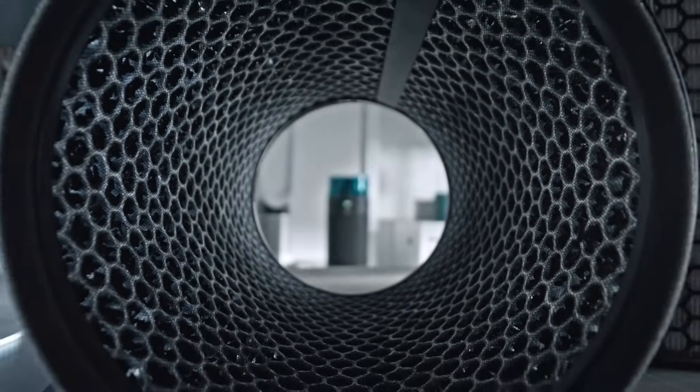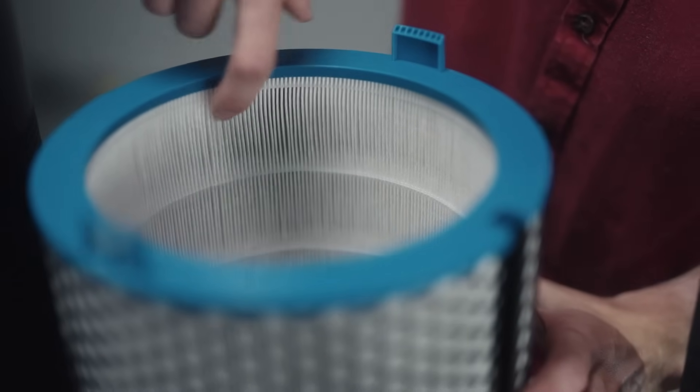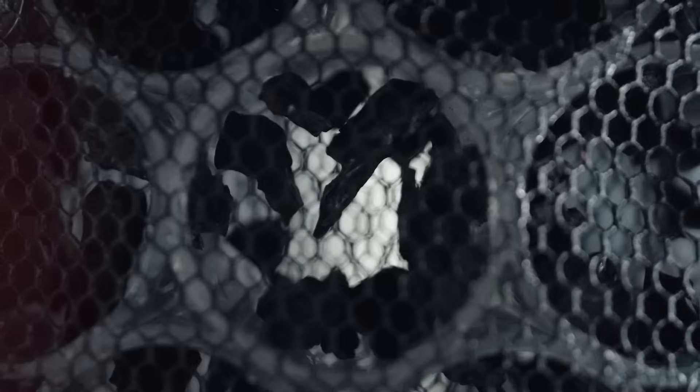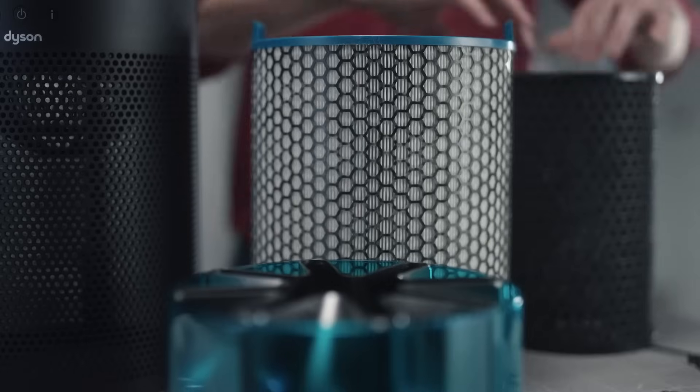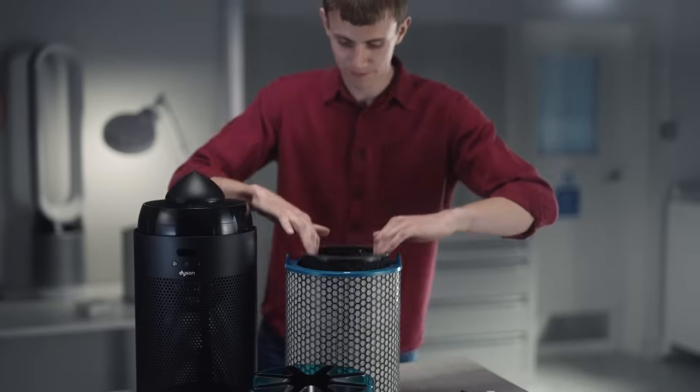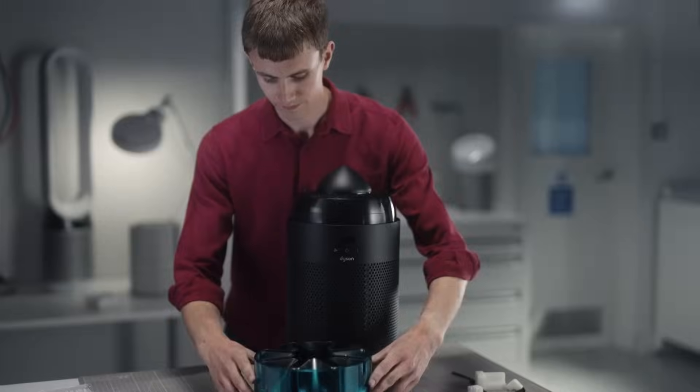Hushjet has 360 degree filtration, a five-year electrostatic HEPA filter which captures particles down to 0.3 microns. Our activated carbon filter removes odours from pets and cooking, as well as potentially harmful gases like nitrogen dioxide and VOCs.